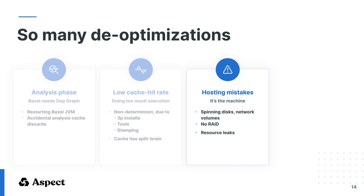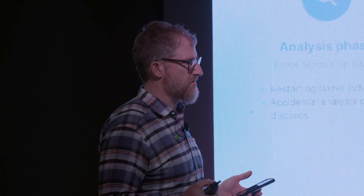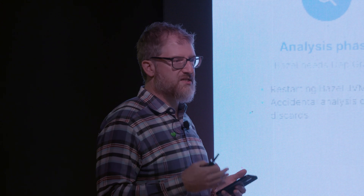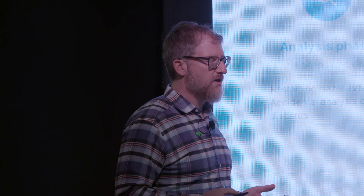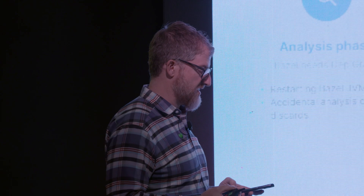The third group is mistakes in how you host one worker machine. The worker just needs to be optimized in the normal ways you would do as a DevOps engineer: avoid spinning disks, you want really fast IO to the disk, so you definitely don't want network volumes. You can get a speed boost with even more IO if you can make a RAID 0 array out of the available devices. Also, since we're reusing machines, we don't want to slowly leak resources over time — it could be file handles, or Docker containers that end up staying resident in the Docker daemon.